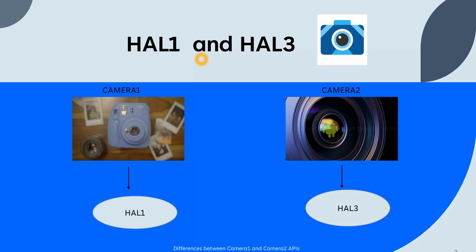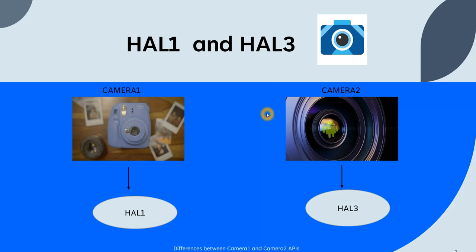All the camera APIs which are dependent on HAL one are called camera one APIs, and all the APIs which depend on HAL three are called camera two APIs. You might have a small confusion — why camera two and not HAL two? It's just named like that by Google; the exact reason why it is named HAL three is not known. Camera one depends on HAL one, and camera two depends on HAL three — remember this terminology as it will help through the rest of the session.